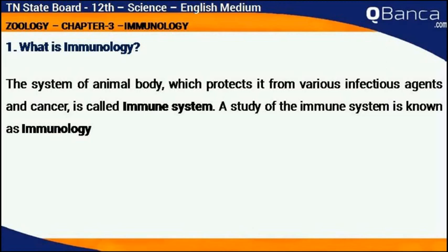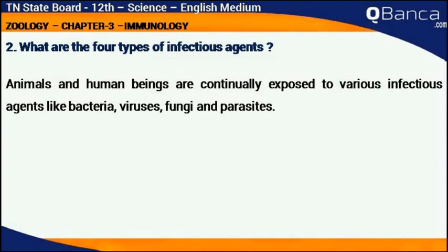What is immunology? The system of an animal body which protects it from various infectious agents and cancer is called the immune system. A study of the immune system is known as immunology. What are the four types of infectious agents?